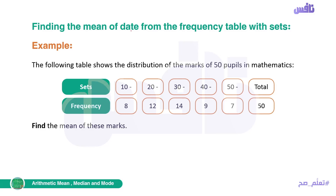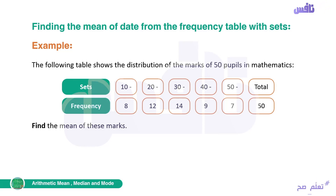Let's look at the example: the following table shows the distribution of marks of fifty pupils in mathematics. Here we have the sets and the frequency. The required is to find the mean of these marks. To find the mean here we make a table, but first we need to see how to find something called the center of sets. We have sets 10–20, 30, and so on, and we need to find the center of each set, because we'll use it in the table to calculate the mean.